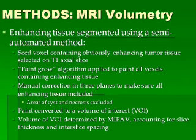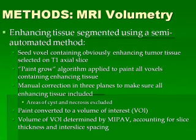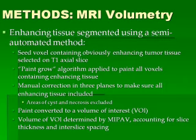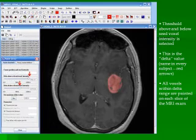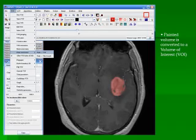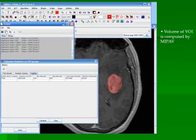A seed voxel containing obviously enhancing tumor tissue is selected on a T1 axial slice, and the paint-grow algorithm is applied to paint all adjacent voxels containing enhancing tissue within a certain intensity threshold. Manual correction was performed in three planes to ensure all areas of enhancement were included, excluding areas of cyst or necrosis. Those painted areas on each slice were then converted to a volume of interest, and the volume was calculated by the software. This illustrates placement of the seed voxel, application of the paint-grow algorithm, conversion to a volume of interest, manual correction in three planes, and final computation of enhancing tumor tissue volume.